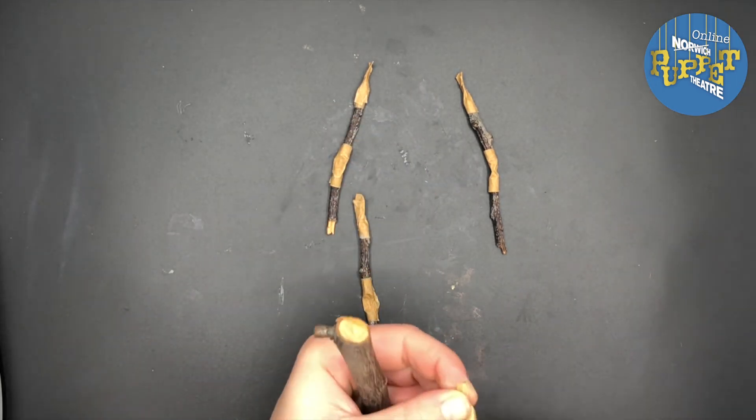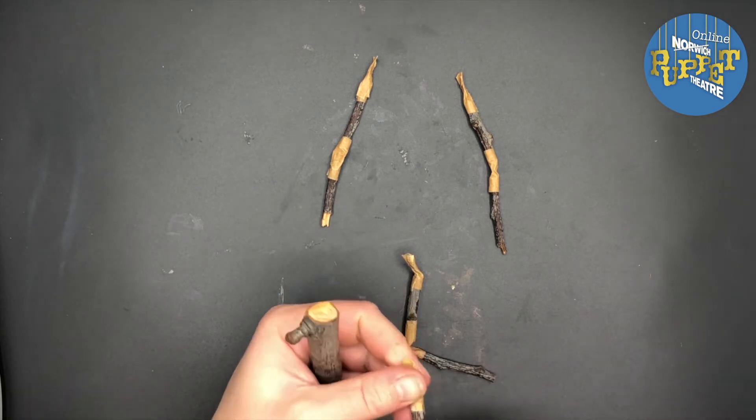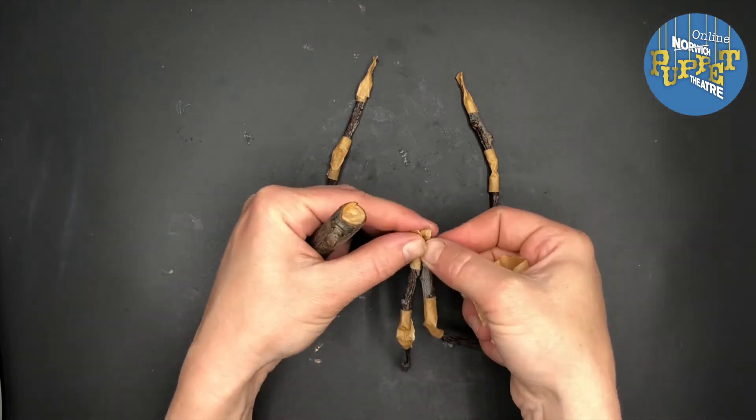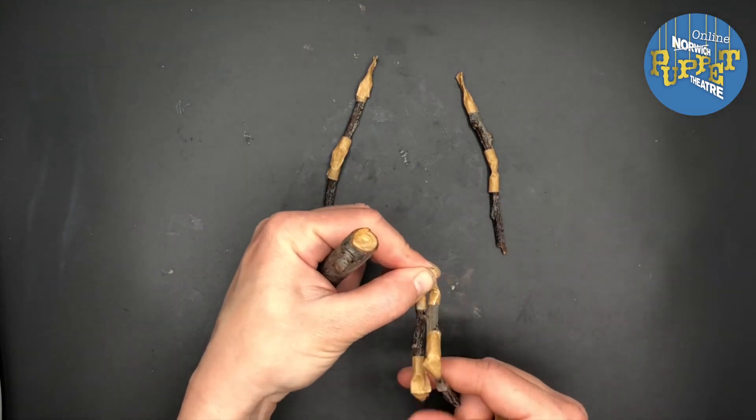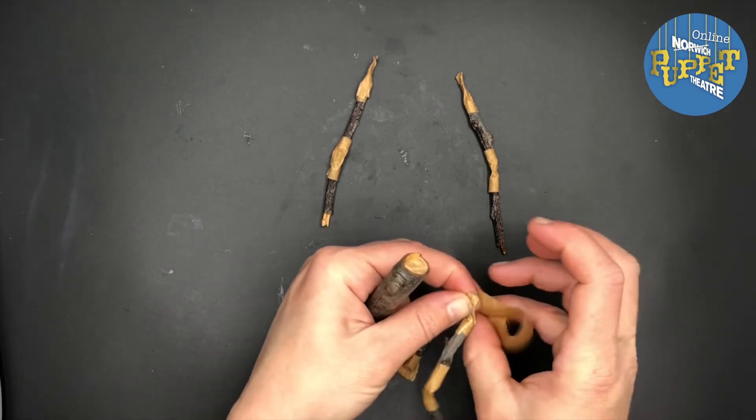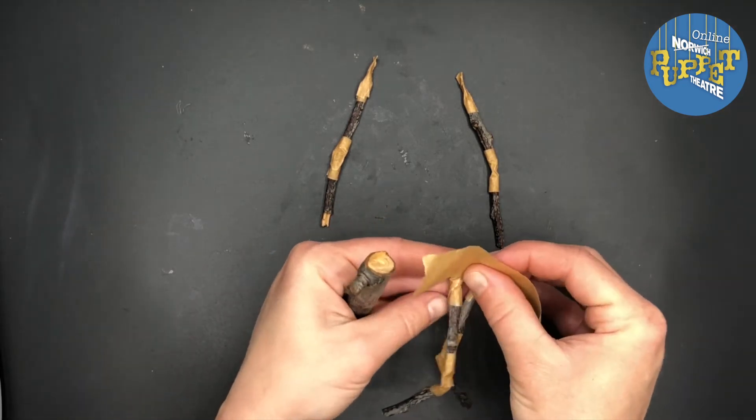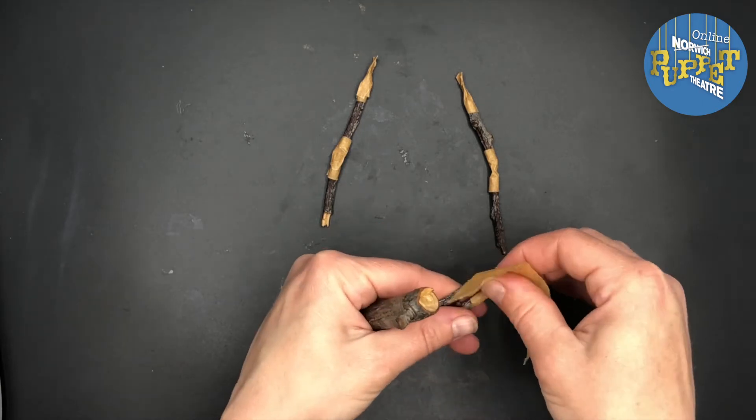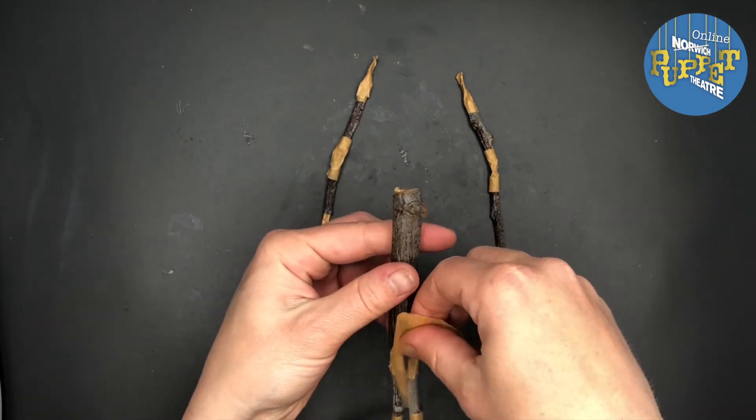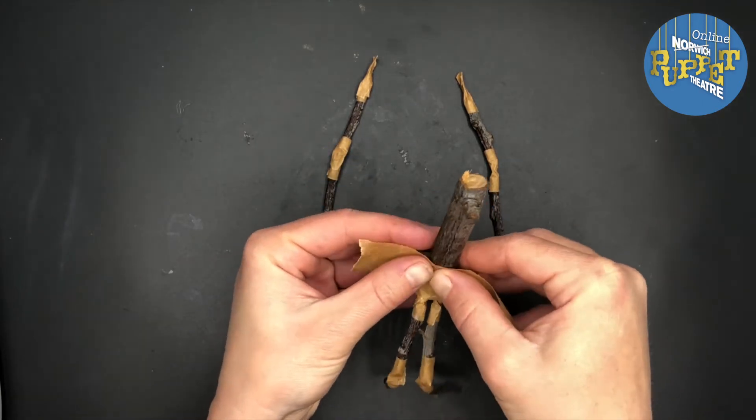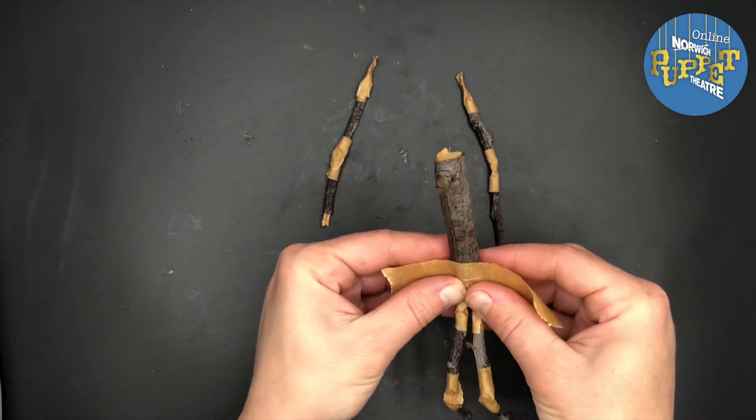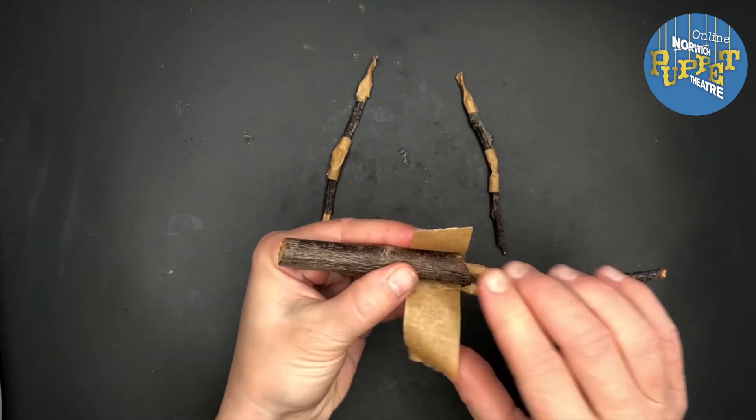Now I'm going to attach my legs. I'm going to do this by taking those tabs of tape at the end of the legs, putting them next to each other, laying a piece of tape just over the top of those, and then sticking that onto the bottom of my body twig. Just making sure that my legs will still bend slightly backwards to allow for a bit of movement.